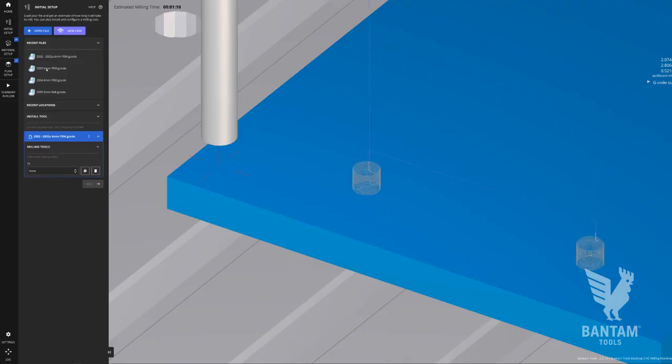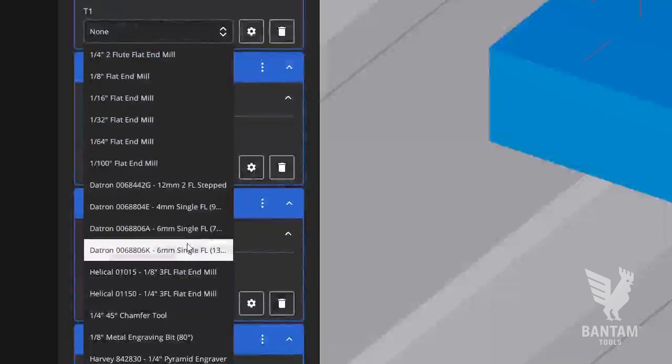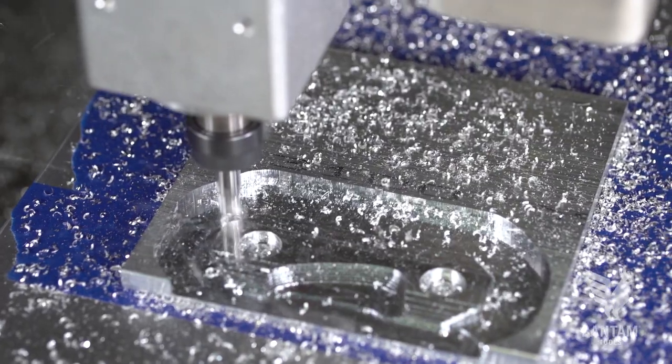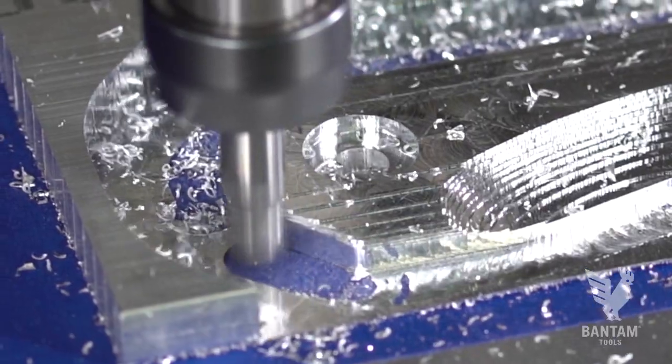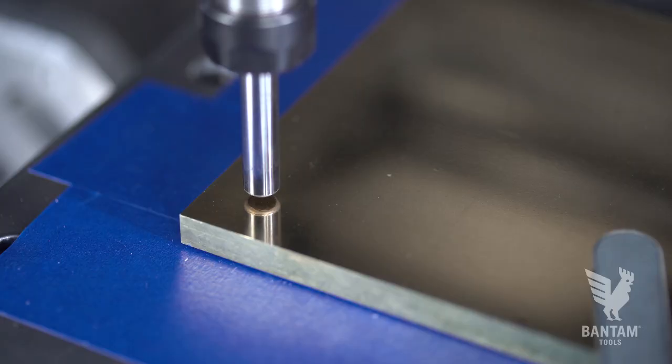Load the G-code files into the Bantam Tools desktop milling machine software, assign the appropriate tools, and begin milling. You'll use a 6mm flat end mill for roughing and contour operations and a 6mm ball end mill for the finishing pass.